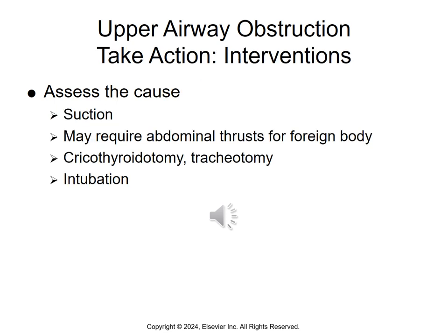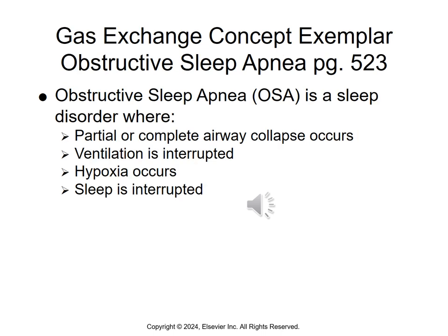Assessing for what may be contributing to the upper airway obstruction, you may have to intervene with suction, abdominal thrust for removal of a foreign body, cricothyroidotomy, tracheotomy, and intubation to maintain oxygenation.